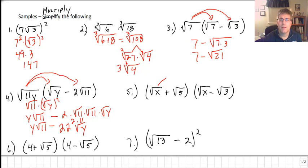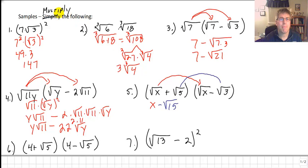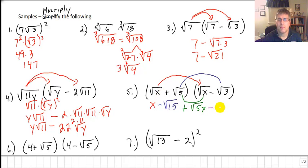Sample problem 5 is a little more complicated because of our FOIL process — we have a binomial times a binomial. The square root of x times the square root of x is x. The square root of 5 times negative square root of 3 is negative square root of 15. The inner terms give plus square root of 5x, and finally square root of x times square root of 3 is negative square root of 3x. We don't have any like radicals to combine, so that is our final answer.